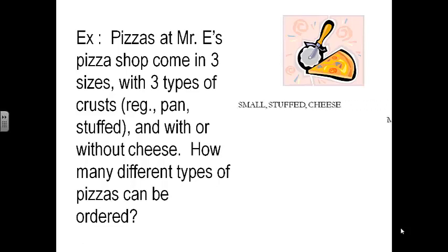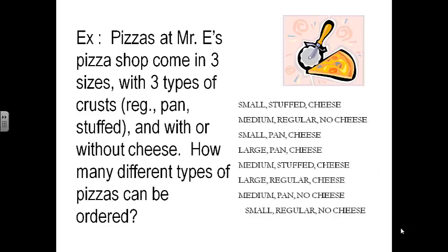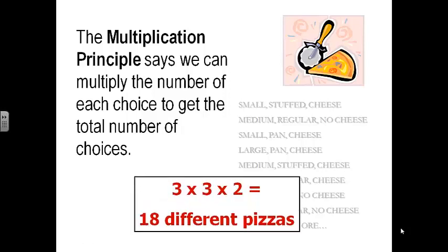Well, you could make a list of all the different possibilities, and you can see that list being formed over there. That would take quite some time. Or, you could use something called the multiplication principle. It says we can simply multiply the number of each choice to get the total number of choices. Since I had three different sizes, three different types of crust, and two different cheeses, we multiply them all together and get 18 different pizzas.